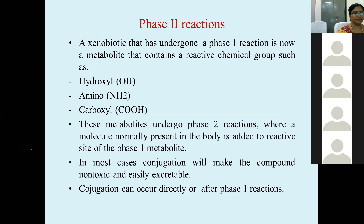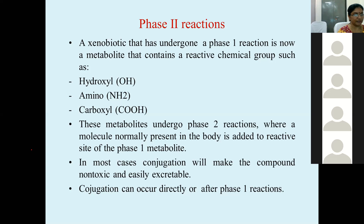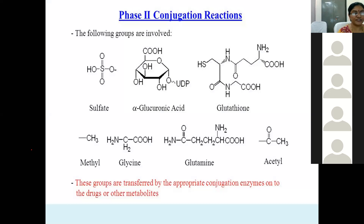Coming to Phase 2 reactions. A xenobiotic that has undergone Phase 1 now contains a reactive chemical group such as a hydroxyl group, amino group, or carboxyl group. These Phase 1 metabolites can be excreted as such, or better, they undergo Phase 2. Conjugation is the most common method of Phase 2 reactions. Conjugation makes the compound non-toxic and easily excretable, and it occurs directly after Phase 1 reactions.